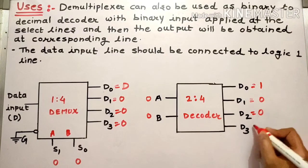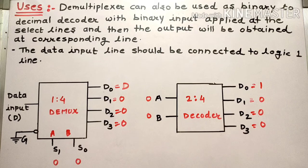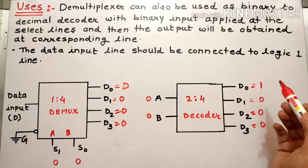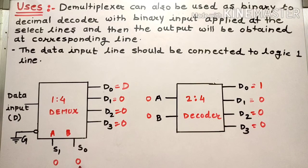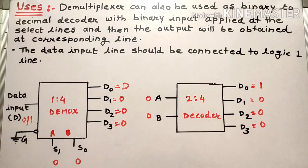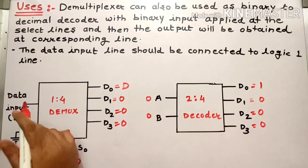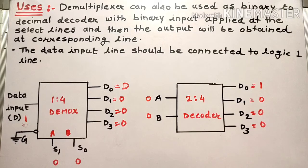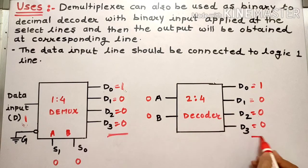So what difference is observed? When 00 is passed, then D0 is high. What you observe is that the output is the same as the decimal equivalent of the binary select input. Here we have just the select line determining which output goes high.